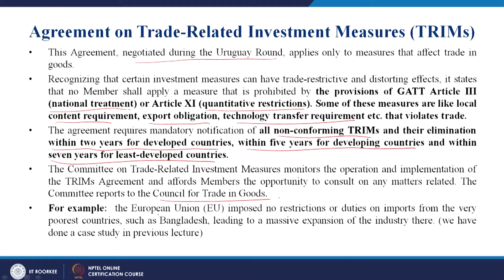For example, the European Union imposed no restrictions or duties on imports from the very poorest countries such as Bangladesh, leading to a massive expansion of the textile industry. But there was a fear also — as in the case of Indonesia, Japan made complaints against Indonesia regarding the automobile sector. TRIMS has slowly evolved as developed countries wanted it changed for the better.